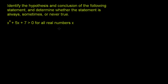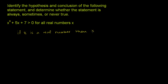First, let's rewrite this as a proposition — as an if-then statement — because then it becomes a lot easier to identify the hypothesis and the conclusion. We could rewrite this as: if x is a real number, then x squared plus 5x plus 7 is greater than 0.